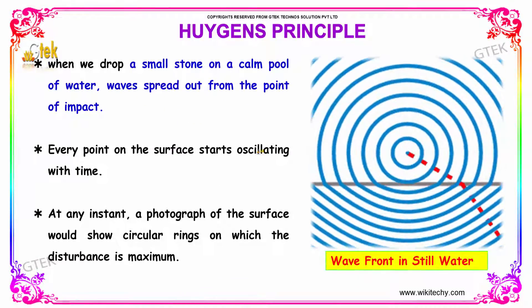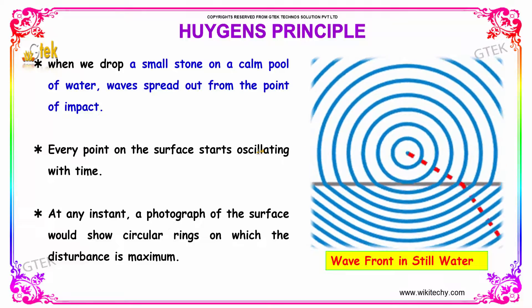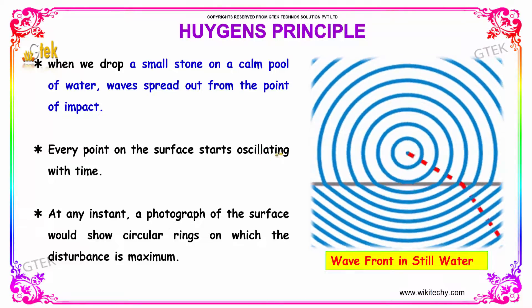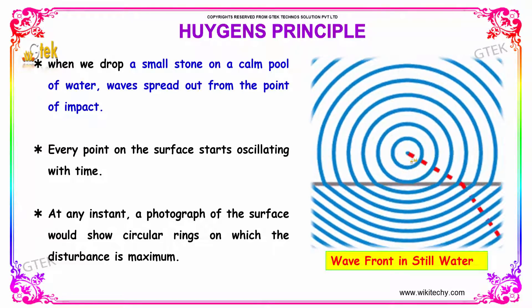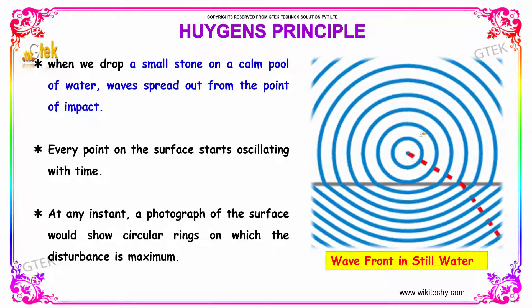Let's go to the concept called Huygens' Principle. When we drop a small stone on a calm pool of water, waves spread out from the point of impact. You can consider and see this as a wave in a pool.